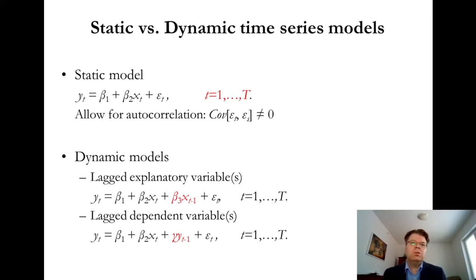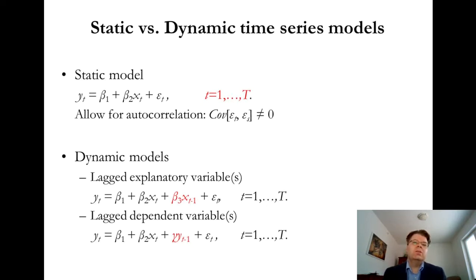If the error term in period T correlates with the error term epsilon in some other time period, then we have this issue called autocorrelation, which is a violation of one of the Gauss-Markov assumptions. That's one of the reasons why I want to discuss autocorrelation — to complete this discussion of the potential violations of the classic OLS assumptions. I will also draw a connection to the dynamic models, where the regression equation explicitly has some kind of connections between different time periods.